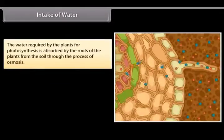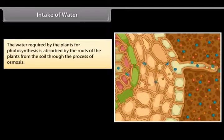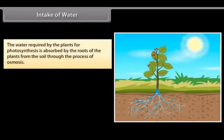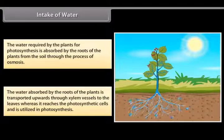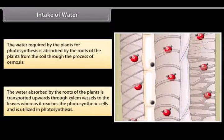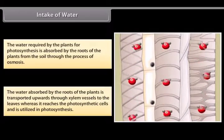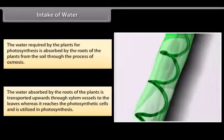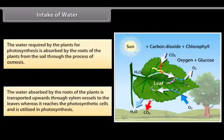The water required by plants for photosynthesis is absorbed by the roots from the soil through the process of osmosis. The water absorbed by the roots is transported upward through xylem vessels to the leaves where it reaches the photosynthetic cells and is utilized in photosynthesis.